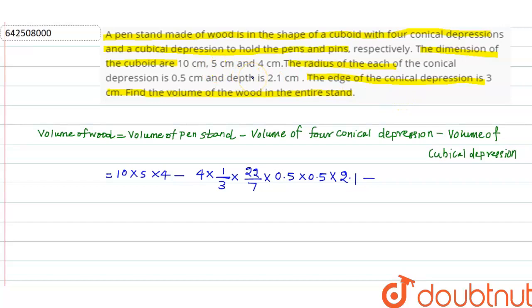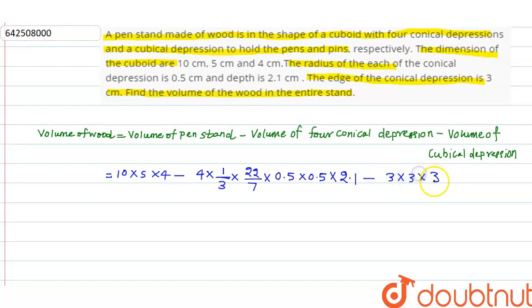Now for the volume of the cubical depression: if the edge is given, volume of cube equals edge cubed. So this equals 3 × 3 × 3.